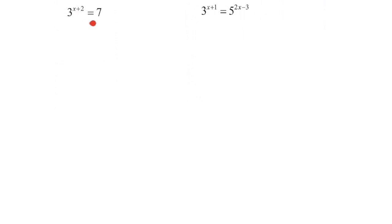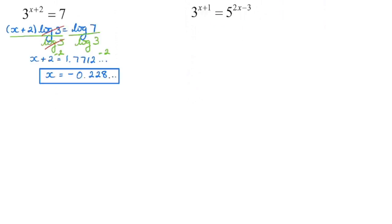For the second-to-last example, pause the video and try it. The power is already isolated, so step one is done. Move the exponent out front and take the common log of both sides. In the calculator, log(7) divided by log(3) gives approximately 1.77. To get x isolated, bring the 2 to zero by subtracting 2 from both sides, giving a negative value for x. That's okay — when you substitute back in and verify, you do end up with a value of 7.